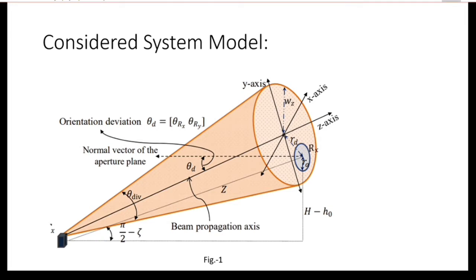We assume that the aerial base receiver is hovering at a distance z from the ground transmitter and its location is known to the transmitter. Since the link length z is much larger than the variation in z direction, we can neglect variation in z direction. We also assume that the instantaneous position is known.